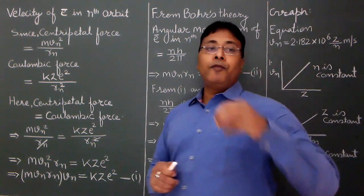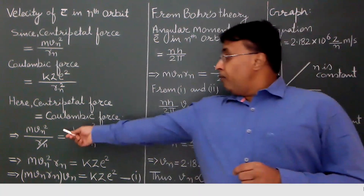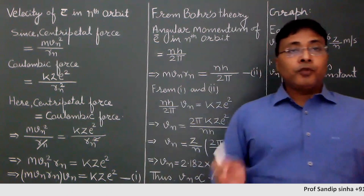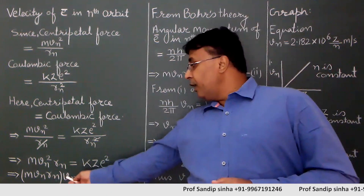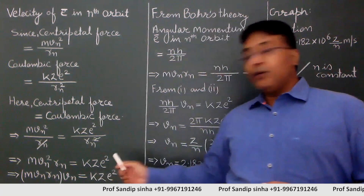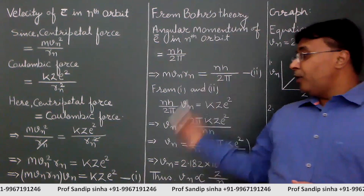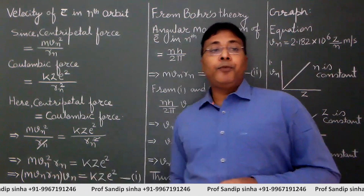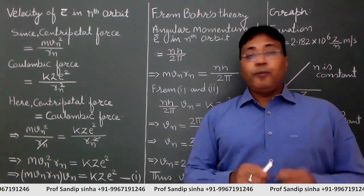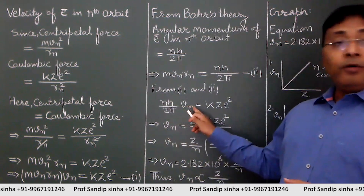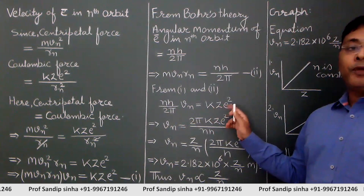Equation 2 from Bohr's theory gives m·vn·rn = nh/2π. Substituting this into Equation 1 — where m·vn·rn × vn = kze² — we put nh/2π in place of m·vn·rn, giving (nh/2π) × vn = kze².